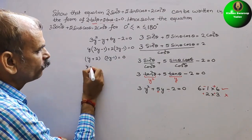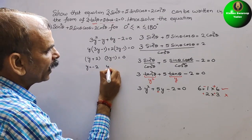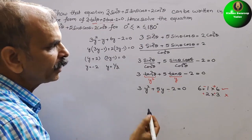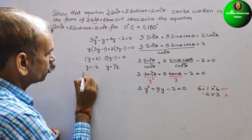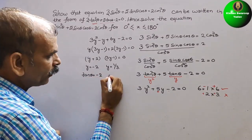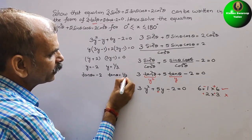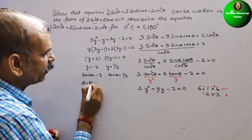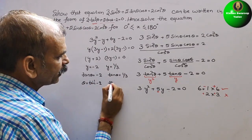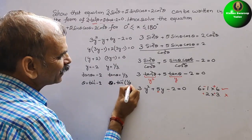So the two factors are (y + 2)(3y - 1) = 0. Solving: y = -2 and y = 1/3. Since y = tanθ, we get tanθ = -2 and tanθ = 1/3. Therefore θ = tan⁻¹(-2) and θ = tan⁻¹(1/3).